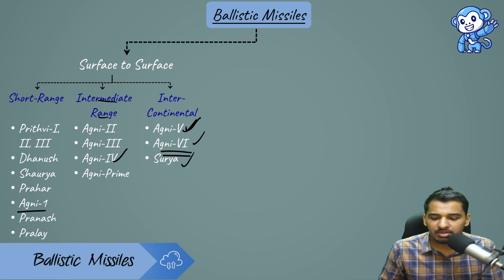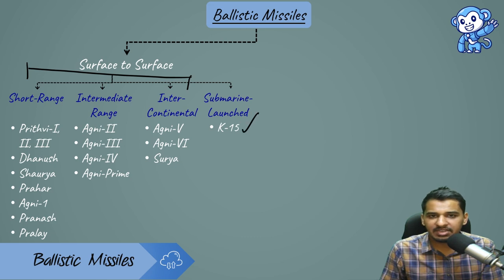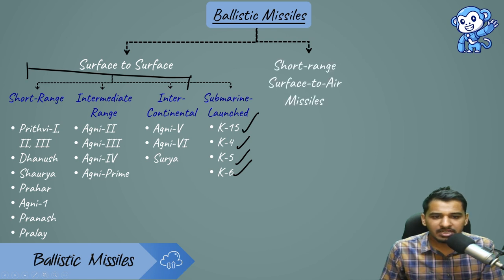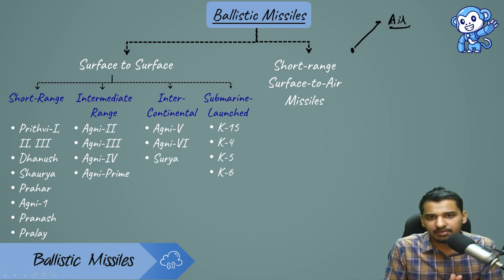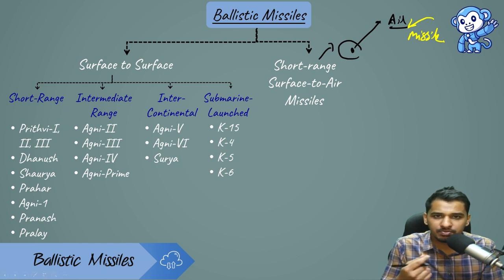Beyond land-based missiles, India has submarine-launched ballistic missiles: K-15, K-4, K-5, and K-6 — some of which are nuclear capable. For short range surface-to-air missiles, which are used to protect against incoming aircraft, drones, and even missiles, India has the Trishul (technology demonstrator), Akash (point defense for protecting Indian Air Force airfields), and Maitri (for low flying aerial targets like helicopters and UAVs).